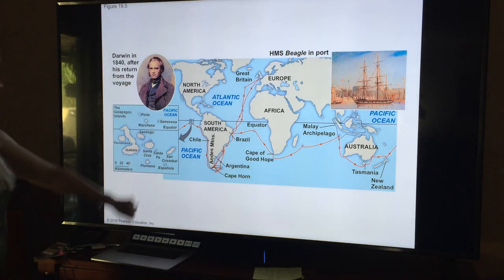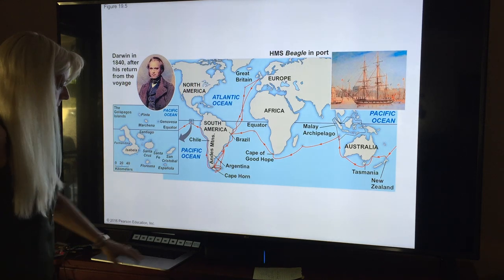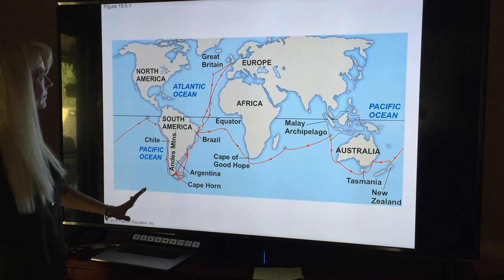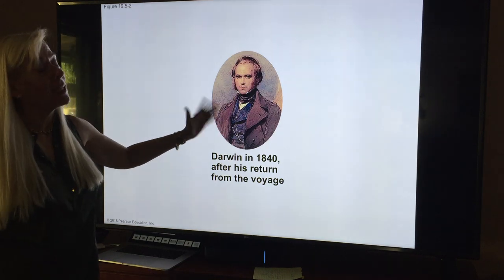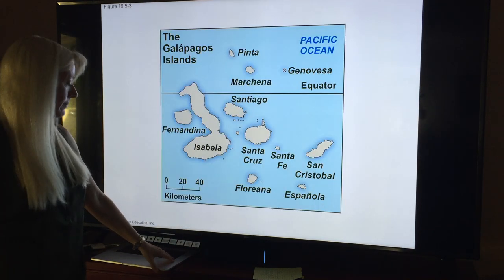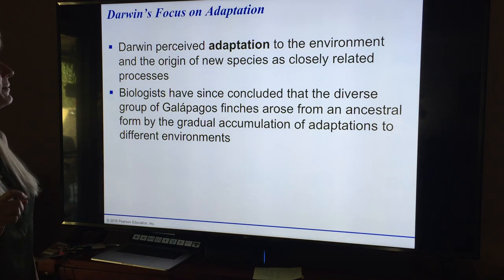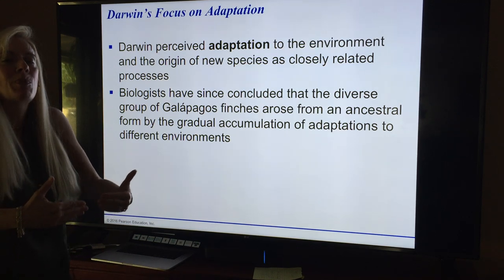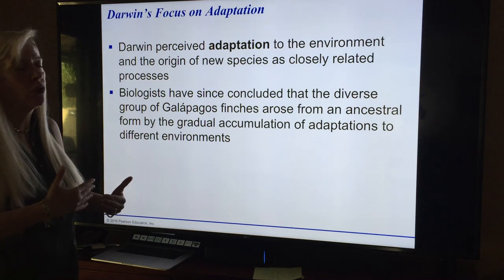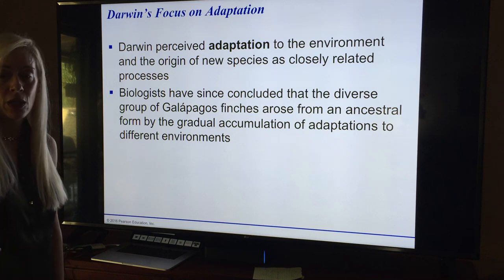He was on the voyage for five years and returned in 1840 — keep that in mind. Darwin perceived adaptation to the environment and the origin of new species as closely related processes. Biologists have since concluded that the diverse group of Galapagos finches arose from ancestral forms by the gradual accumulation of adaptations.